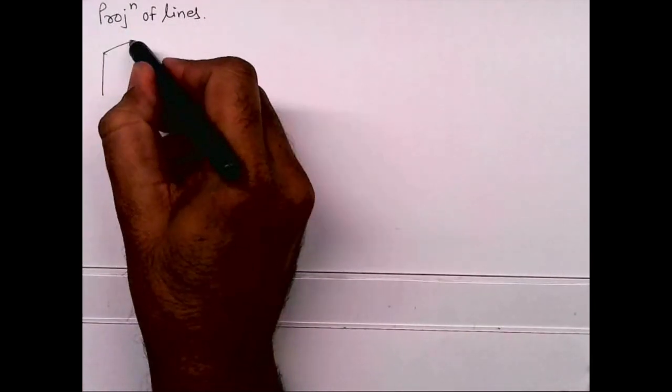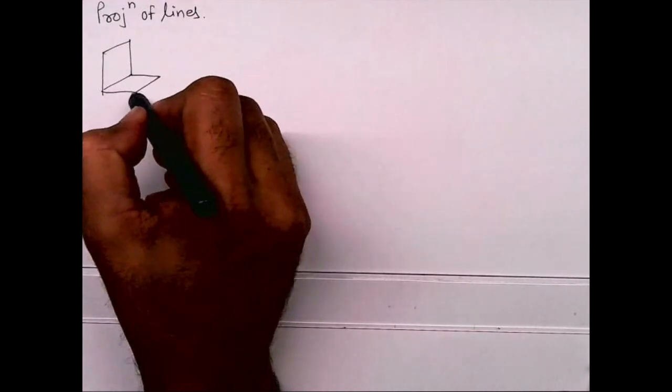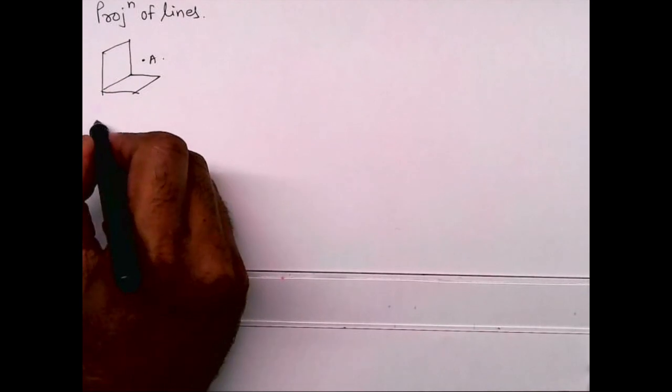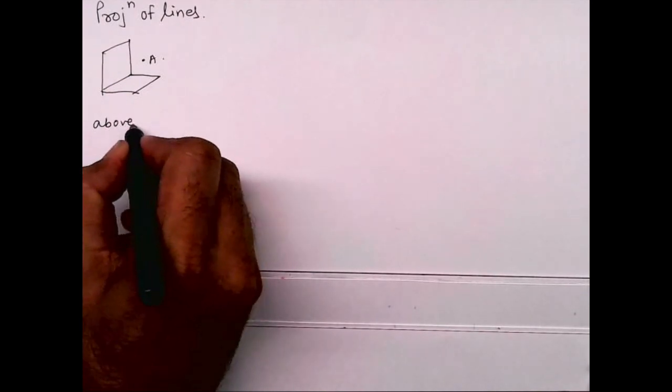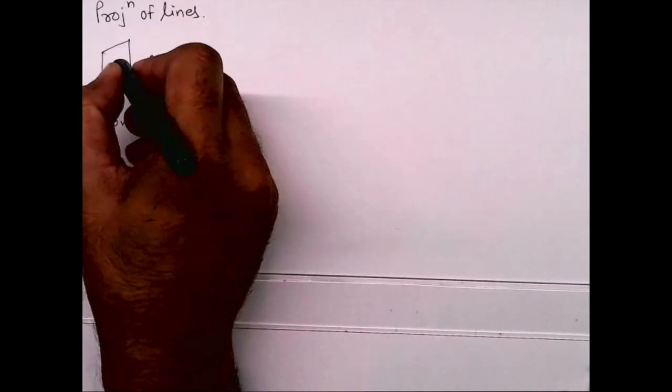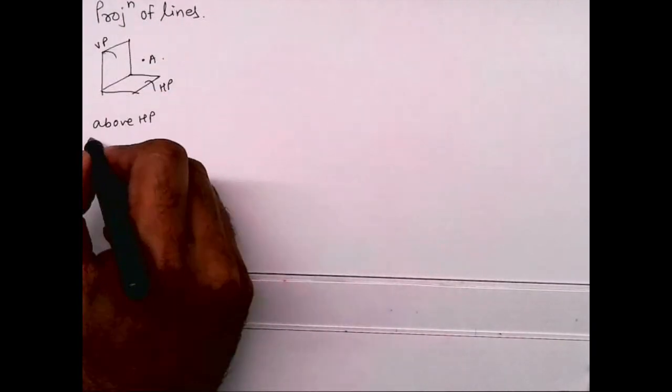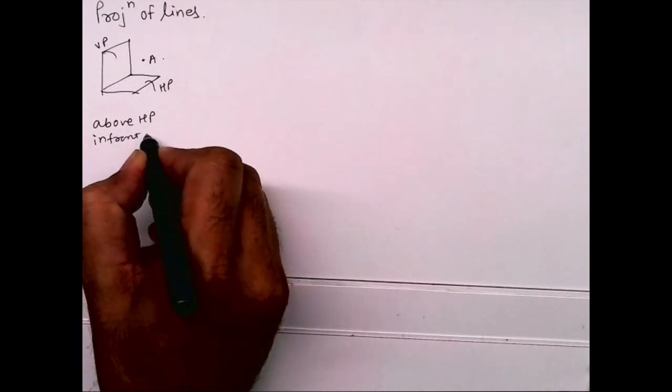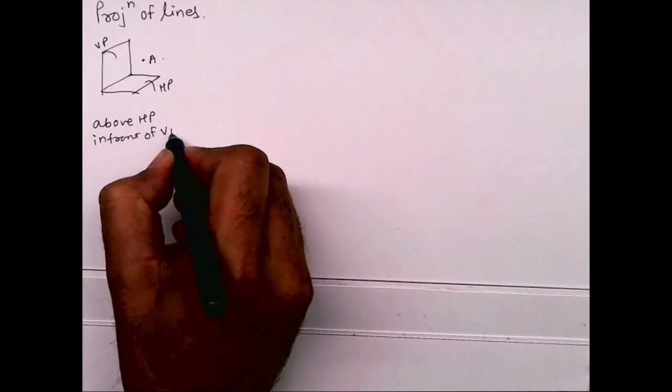So we have two planes like this, point A is over here. Generally we say that point A is above HP and in front of VP. We are doing first quadrant right now, so in that we'll say it is above HP and in front of VP.